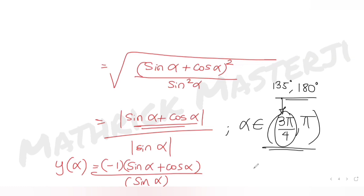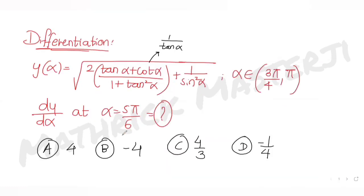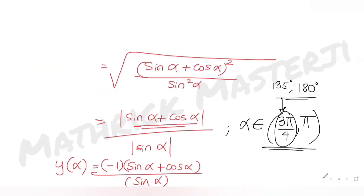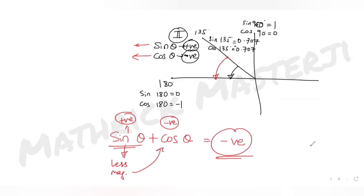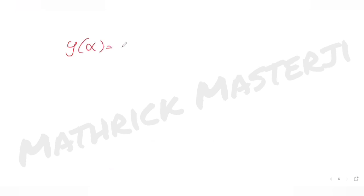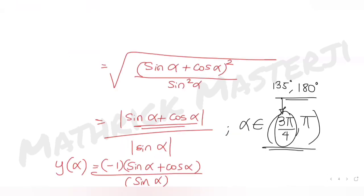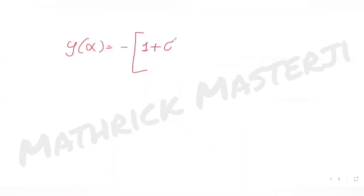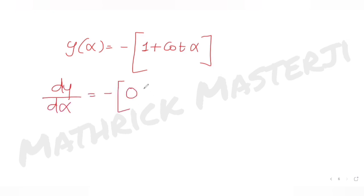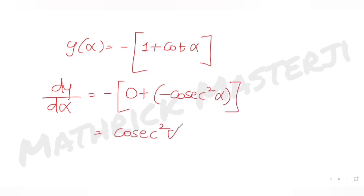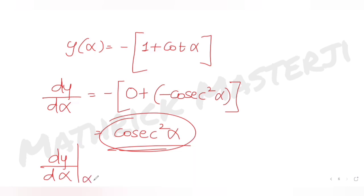Now we need to find the derivative of y(α) at α = 5π/6. Simplifying: y(α) = −(sin α + cos α)/sin α = −1 − cot α. Taking the derivative: dy/dα = 0 − (−cosec²α) = cosec²α.